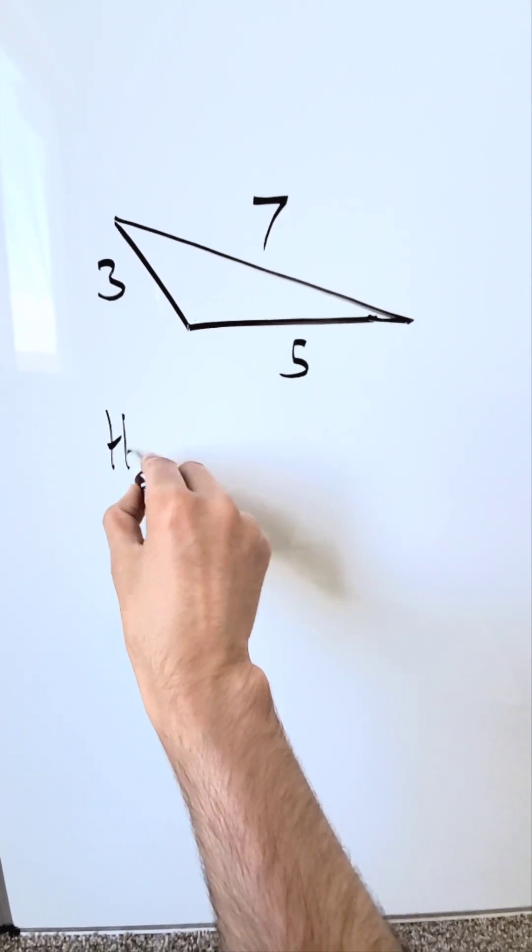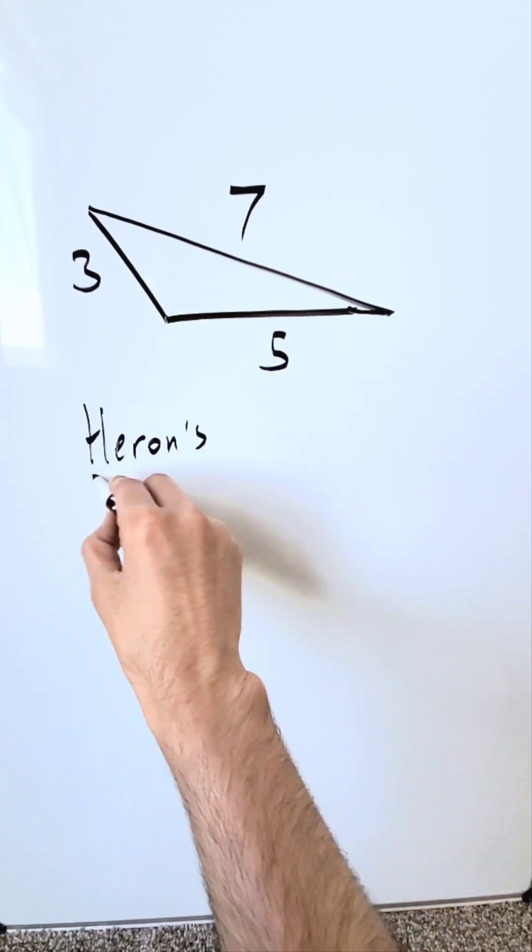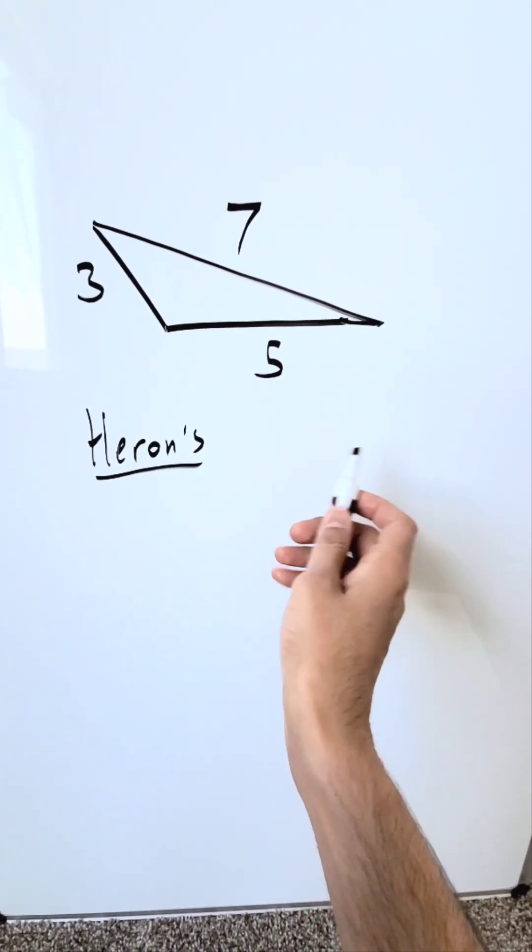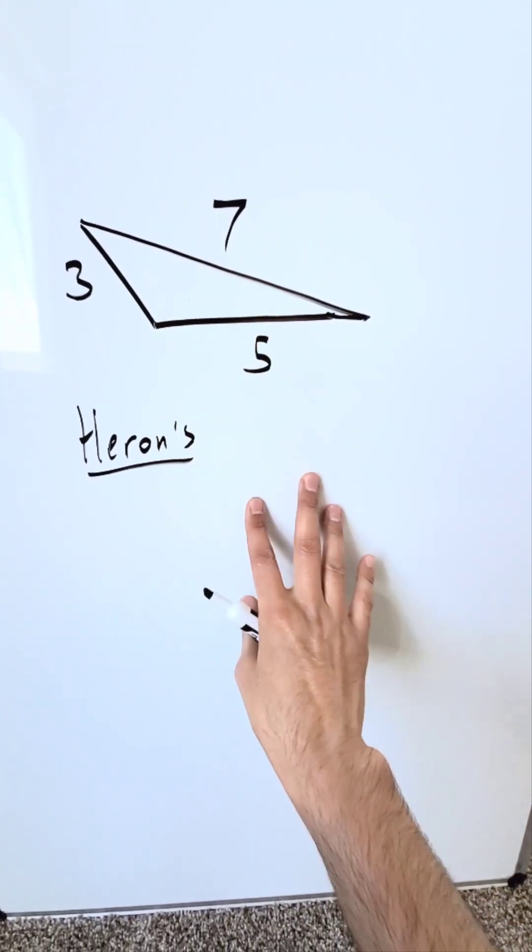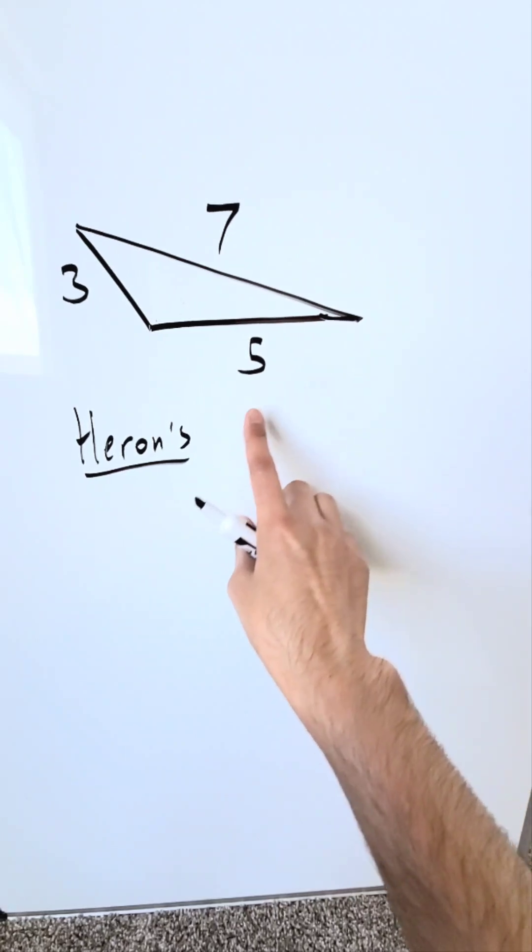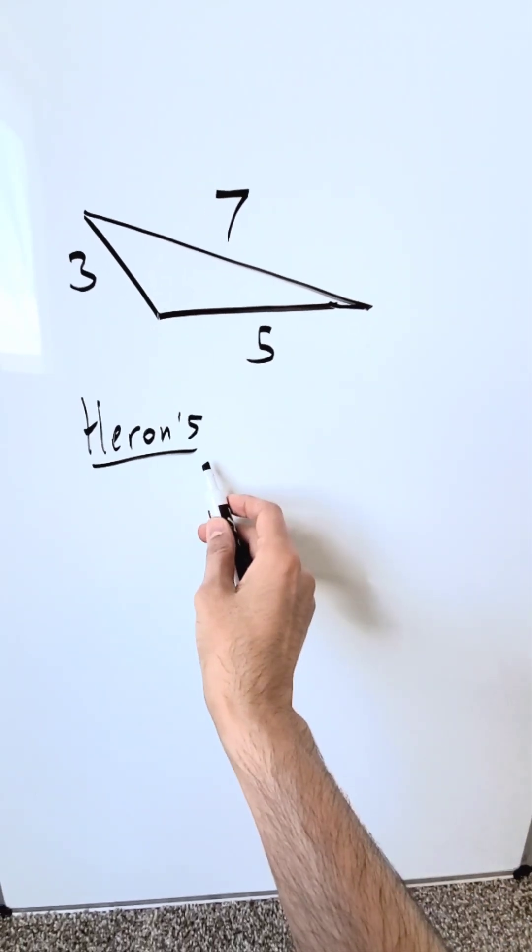You can. You have a specific formula, the Heron's formula for determining the area of a triangle. So long for any triangle you have at least the three sides given. You need to have the three side dimensions provided and you can use this formula.